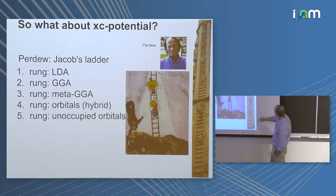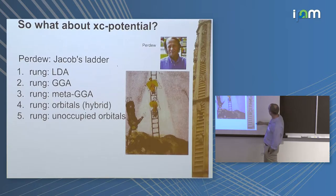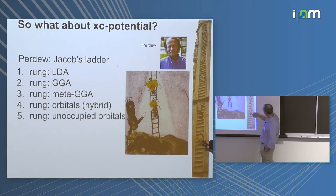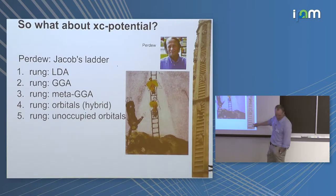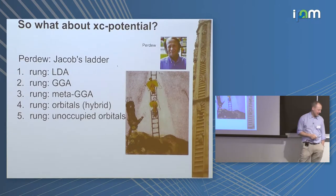John Perdew established the idea of a hierarchy of approximations in this space, calling it Jacob's Ladder — from a painting and the biblical story of Jacob dreaming of angels climbing the ladder to the sky. This is from the church in Bath in the UK.